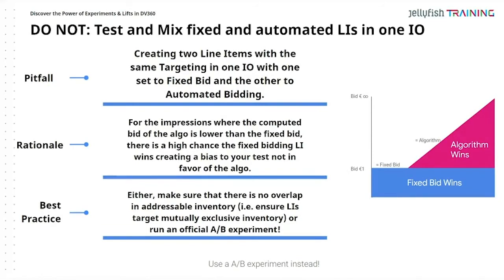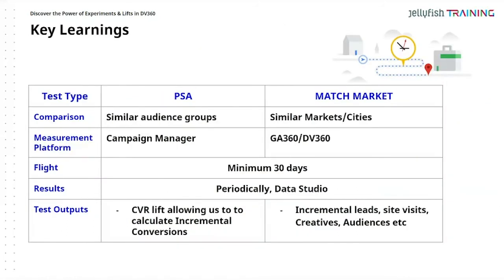For traders, here are some pitfalls: do not mix fixed and automated bidding line items in one insertion order. People sometimes create two line items with the same targeting in one IO — one set to fixed bid and the other to automated bid — and that's a no-no. The algorithm's bid may be lower than the fixed bid, creating a high chance the fixed bidding line item wins, which introduces bias. Best practice: ensure no inventory overlap, make line items mutually exclusive, and run an official A/B test.